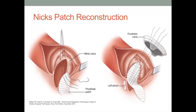Interrupted sutures without pledgets are suggested for accuracy and strength. At the level of the aortic annulus, interrupted sutures with pledgets are placed and passed first through the patch and then through the sewing ring of the prosthesis. The remainder of the valve sutures are subsequently placed through the annulus and sewing ring in standard fashion. If the left atrial wall is flexible and the defect is small, the left atrial wall can be approximated directly to the patch. Otherwise, a second patch is fashioned to reconstruct the left atrial defect.